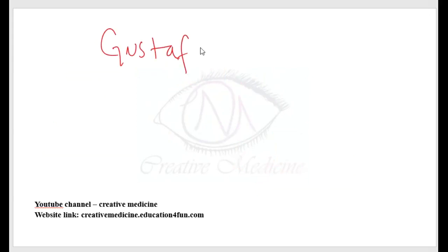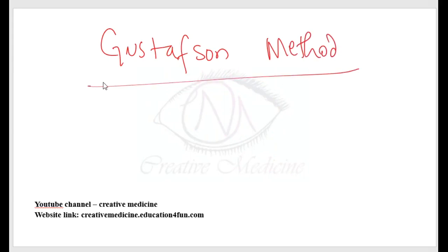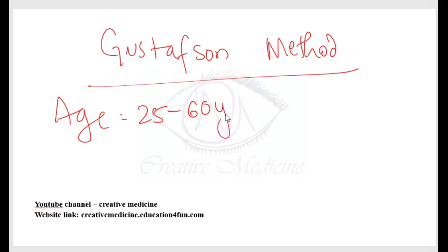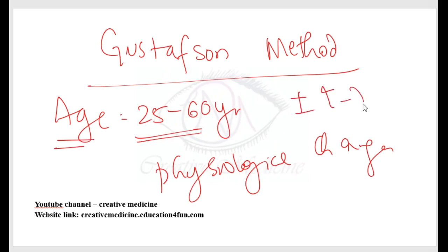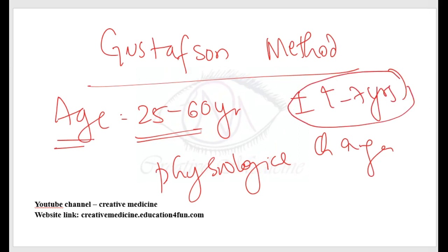Gustafson's method determines the age from 25 to 60 years. It is based on the normal physiological changes that are occurring in the teeth with age, so we can use this method for determining age from teeth. It determines the age with an error of plus or minus 4 to 7 years, and there is an increase in error as the person crosses 50 years of age.